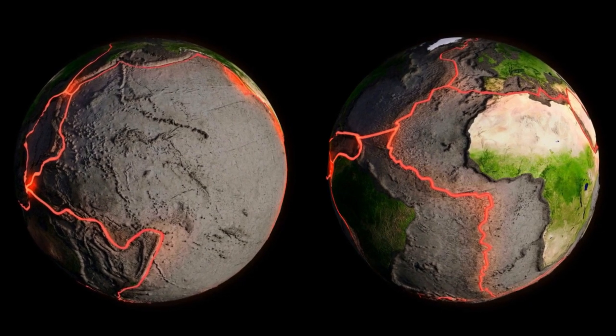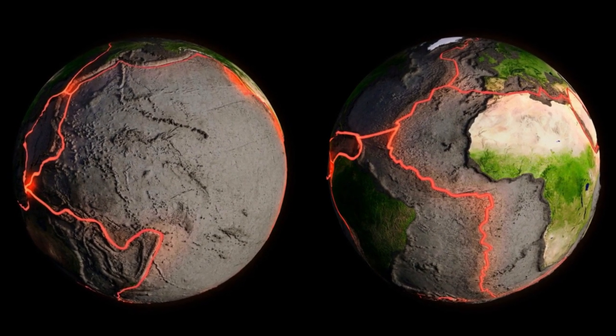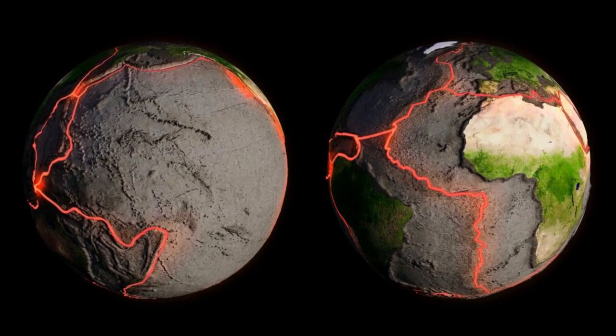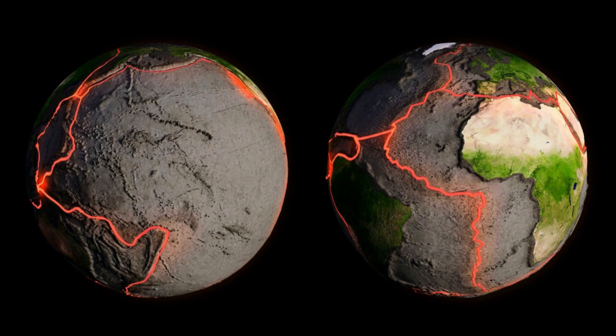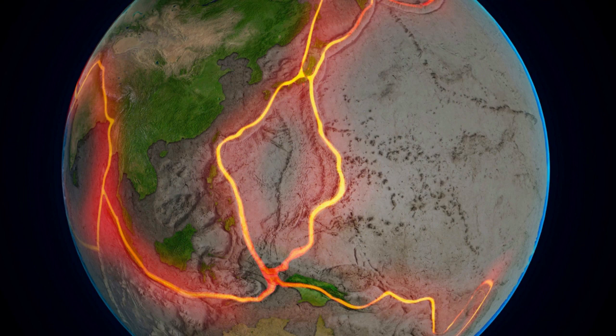Why do earthquakes happen? The earth's outer shell is divided into enormous jigsaw pieces called tectonic plates. These plates are like earth's puzzle pieces, and they're never still — they're constantly shifting. Sometimes these puzzle pieces push into each other, or one plate tugs away from another. When this happens, they create a lot of pressure along their edges. This pressure is what we call tectonic stress.